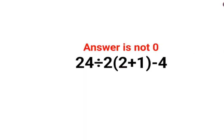Welcome everyone. Today we are going to understand how to solve this kind of problem. We have 24 divided by 2 multiplied by 2 plus 1 minus 4. A lot of people thought this is 24 divided by 2 multiplied by 3.